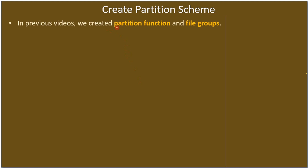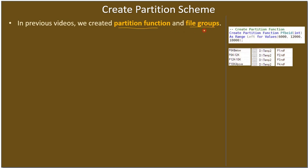In the previous videos we created a partition function as well as file groups. This is the partition function we created — pfbeid — that's our partition function name. We specified the value range, and after that we created four files where each file belongs to one group.